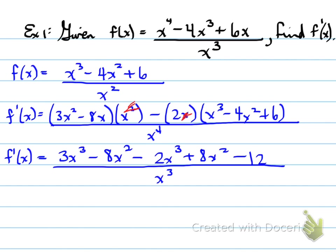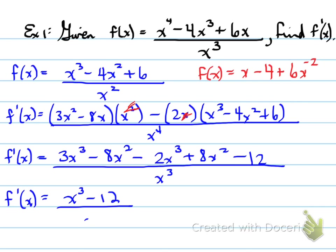Once we do that, we collect the like terms and we end up with f prime of x equal to x cubed minus 12, all over x cubed. That is f prime at x.